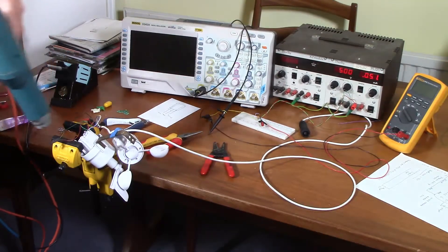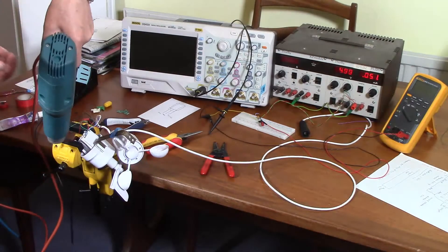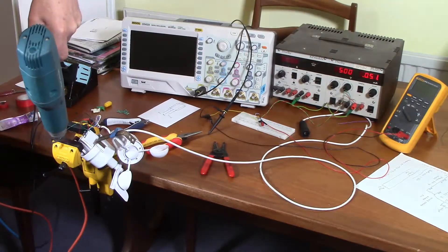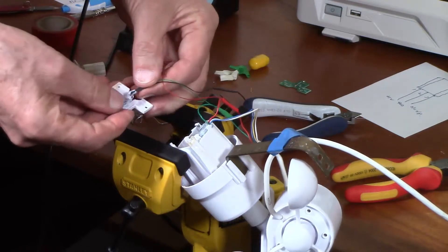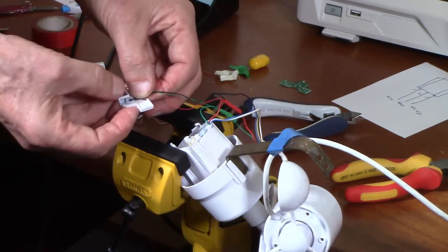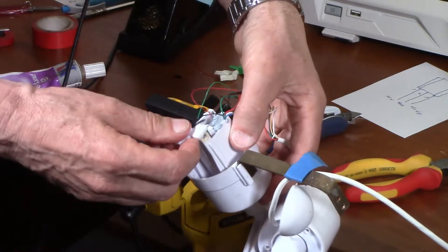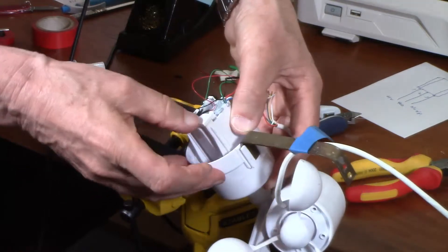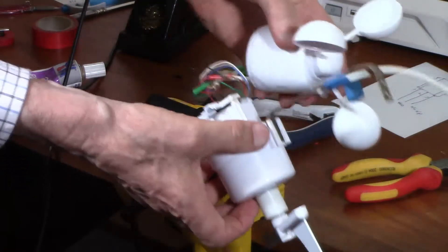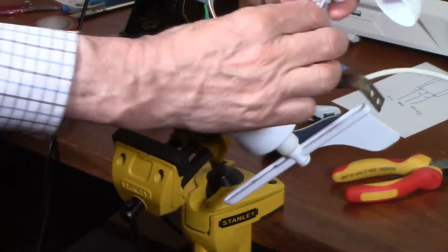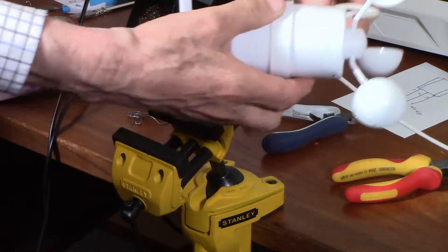I'm just preparing the Hall effect switch for installation by putting some heat shrink sleeving on it. Let's try this the other way around. I think it should go like that. Right, so let me put that like that. And just hope it stays there whilst we fix this in.